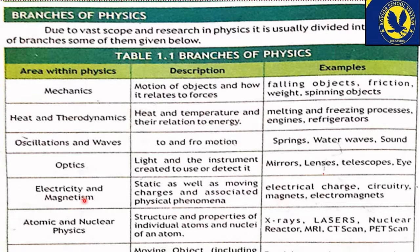پانچویں branch ہے electricity and magnetism — اس پر باقاعدہ electrical engineering ہے۔ Static as well as moving charges and associated physical phenomena — stationary charges، جیسے woolen sweater یا shawl کو بالوں سے رگنے پر جو charge نکلتا ہے یعنی static charge، اور ساتھ ساتھ گھروں میں استعمال ہونے والا electric current۔ Electrical circuits، magnets، electromagnets — یہ ساری چیزیں اس field میں پڑھی جاتی ہیں۔